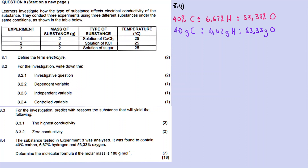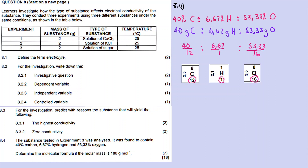You need to change the grams into moles by dividing by the molar masses. For carbon: 40 divided by 12 (molar mass of carbon). For hydrogen: 6.67 divided by 1 (molar mass of hydrogen). For oxygen: 53.33 divided by 16 (molar mass of oxygen).